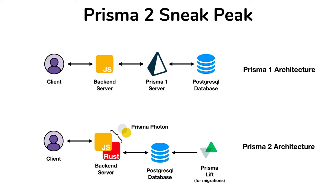The architecture of Prisma 2, in addition to being a little different from Prisma 1, also splits the functionality into two different applications. The first one is called Photon — this is the query engine plus the JavaScript layer so that we can write all of our CRUD operations in our backend code to communicate with the database. The other program is called Lift, which will actually apply all of the migrations to the database. By splitting this functionality, it allows us to separate accessing our data from updating and maintaining our database schema, providing more flexibility.